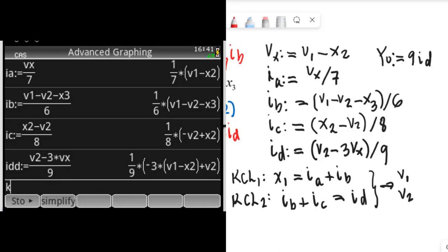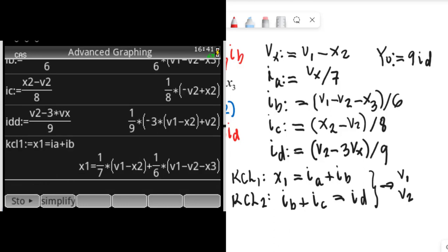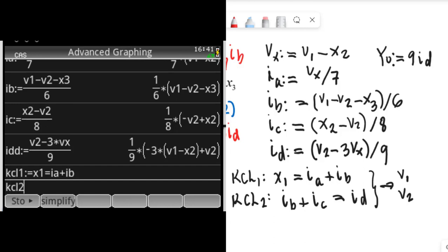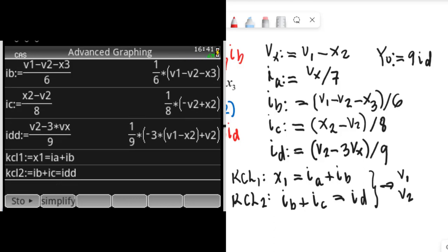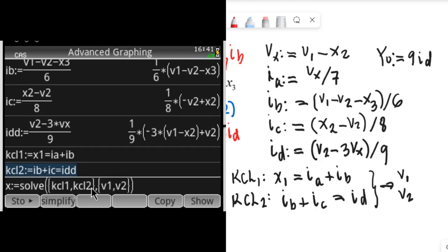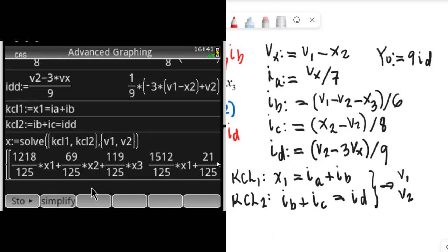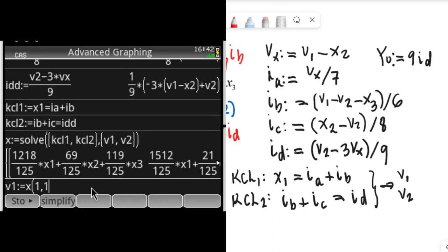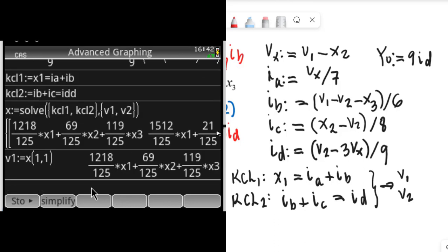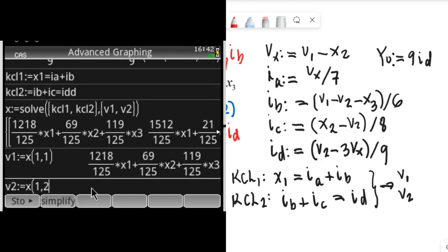We are ready to write KCL1 as current going in, X1, currents going out, Ia plus Ib. KCL2 is Ib and Ic going in, and Id comes out.